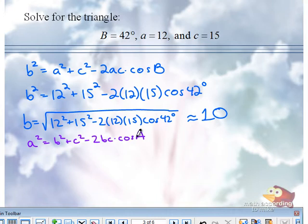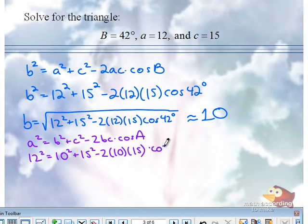We found, we were given little a to be 12. We found little b to be 10. Approximately, little c was 15. And angle A, we don't know.